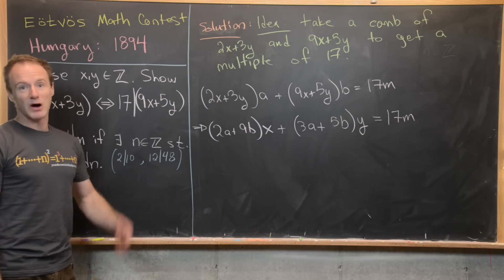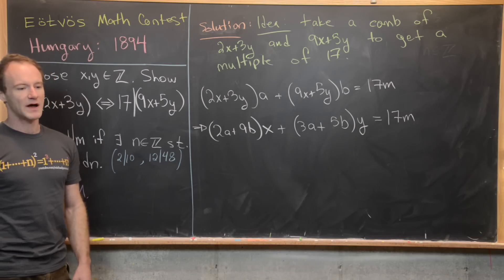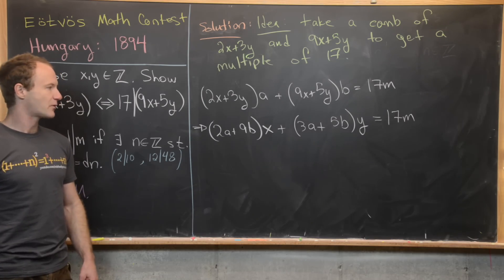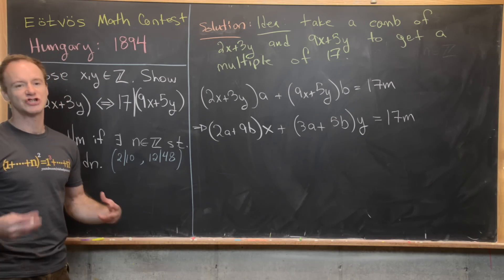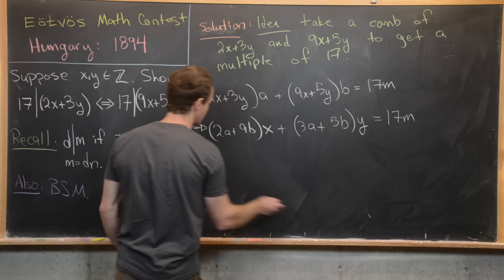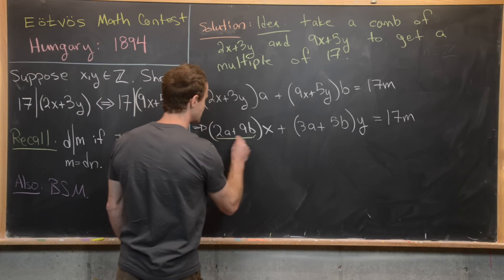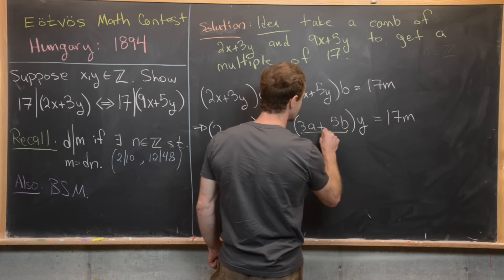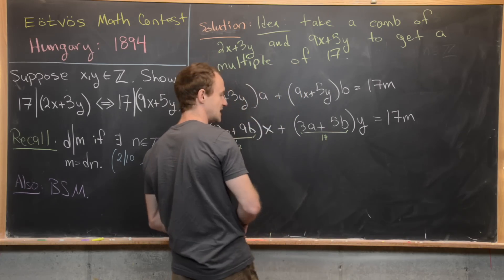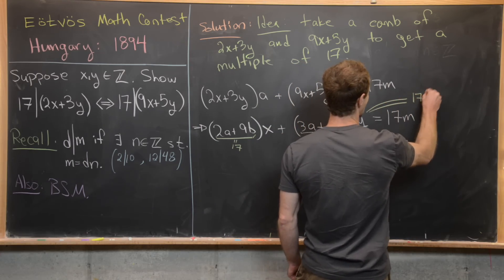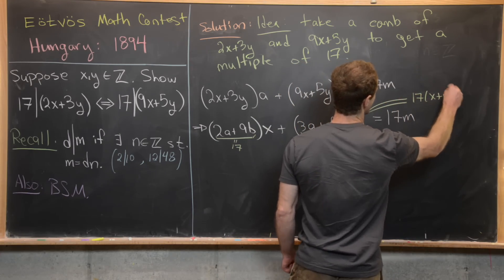So now there's a bunch of ways that this could go. But before we dive into all of the different ways that this can go, we probably want to see if we can achieve the lowest hanging fruit. And the lowest hanging fruit would be each of these is equal to 17. So notice if each of these is equal to 17, then we indeed do have that this is a multiple of 17. In fact, it is 17x plus 17y.